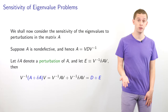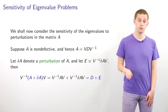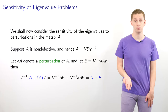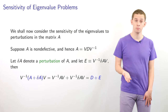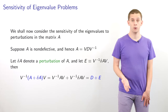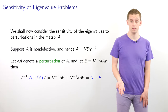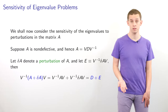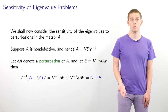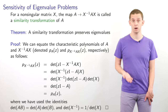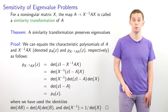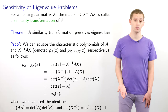We'll now consider the sensitivity of eigenvalues to perturbations in the matrix A. Suppose A is a non-defective matrix, so A can be written as V*D*V⁻¹ for a non-singular matrix V. Let delta_A be a perturbation of A and let E equal V⁻¹ * delta_A * V. If we look at V⁻¹ applied to (A + delta_A) * V, we can write that as V⁻¹ * A * V plus V⁻¹ * delta_A * V, which equals D + E. Before we proceed, we introduce the concept of a similarity transformation: given a non-singular matrix X, the map that takes a matrix A to X⁻¹ * A * X is called a similarity transformation of A.